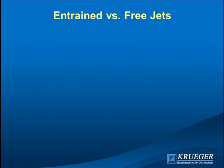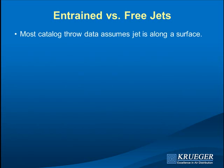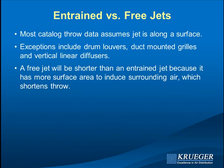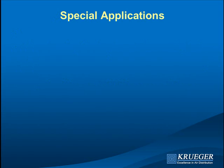Most catalog diffuser data assumes the jet is along a surface. Grill data assumes the grill is within nine inches of the ceiling, so the jet moves along the ceiling and only induces air on one side. Drum louvers, duct-mounted grills, and vertical linear diffusers, however, typically operate as free jets, which can entrain air from both sides. A free jet gains mass faster and therefore slows down sooner. The correction factor is the square root of 2 (approximately 0.707) to convert from entrained to free-jet throw.